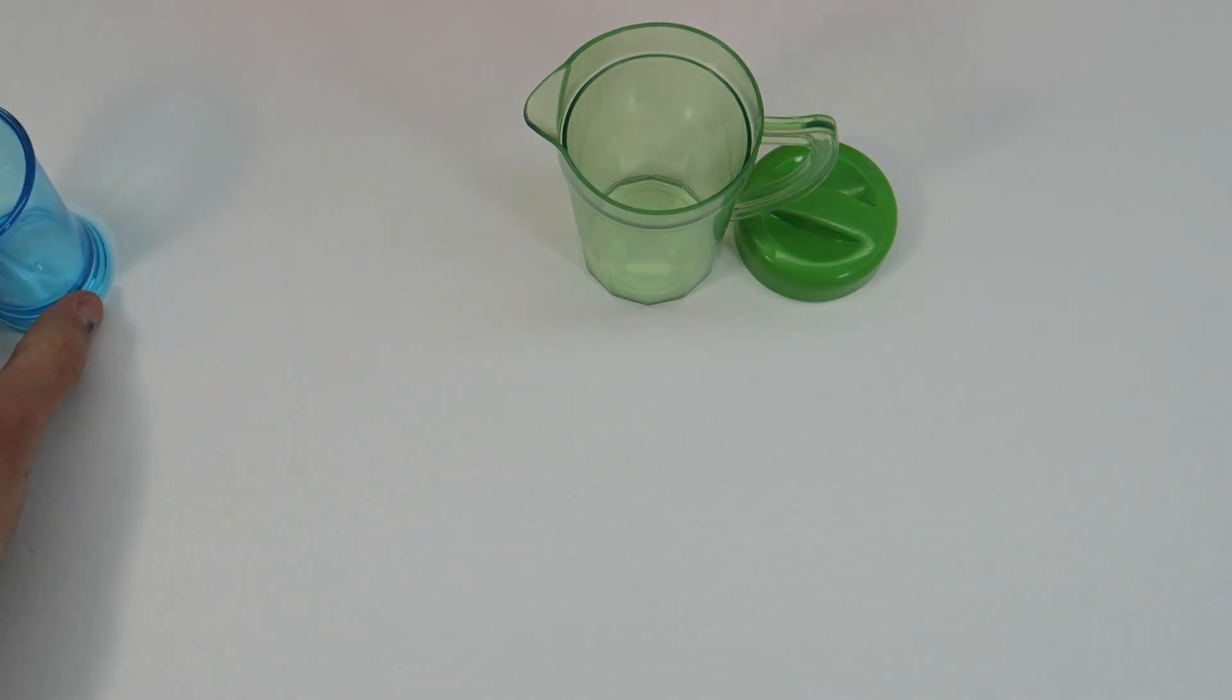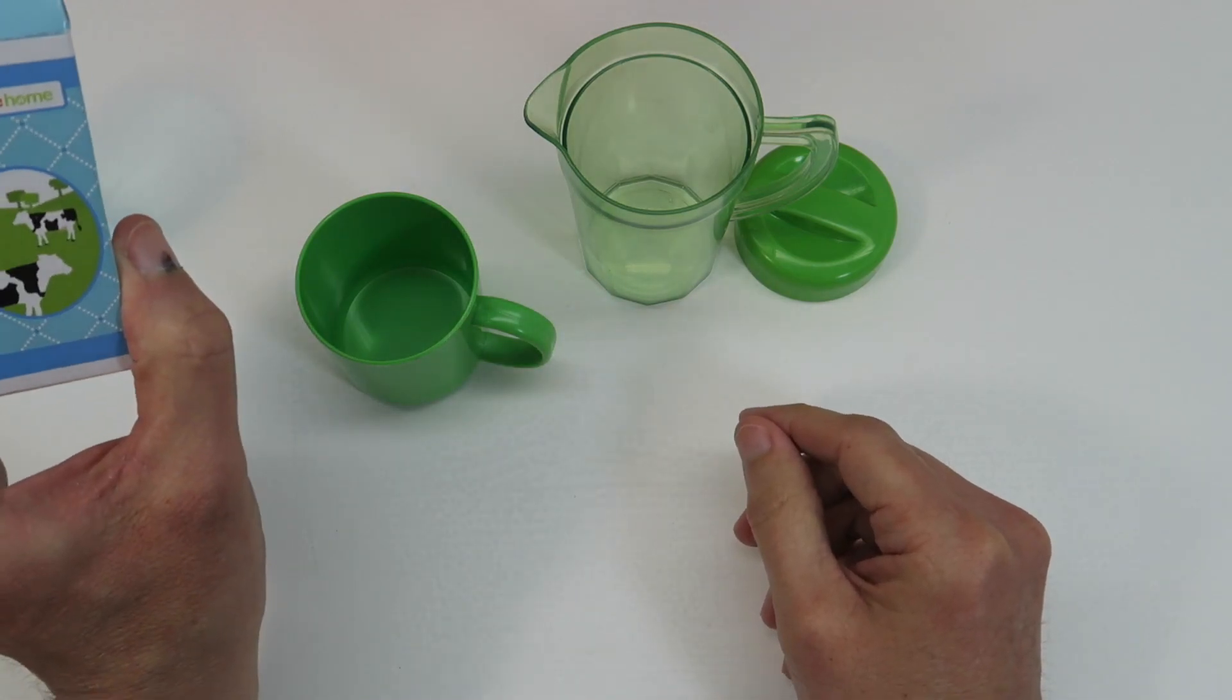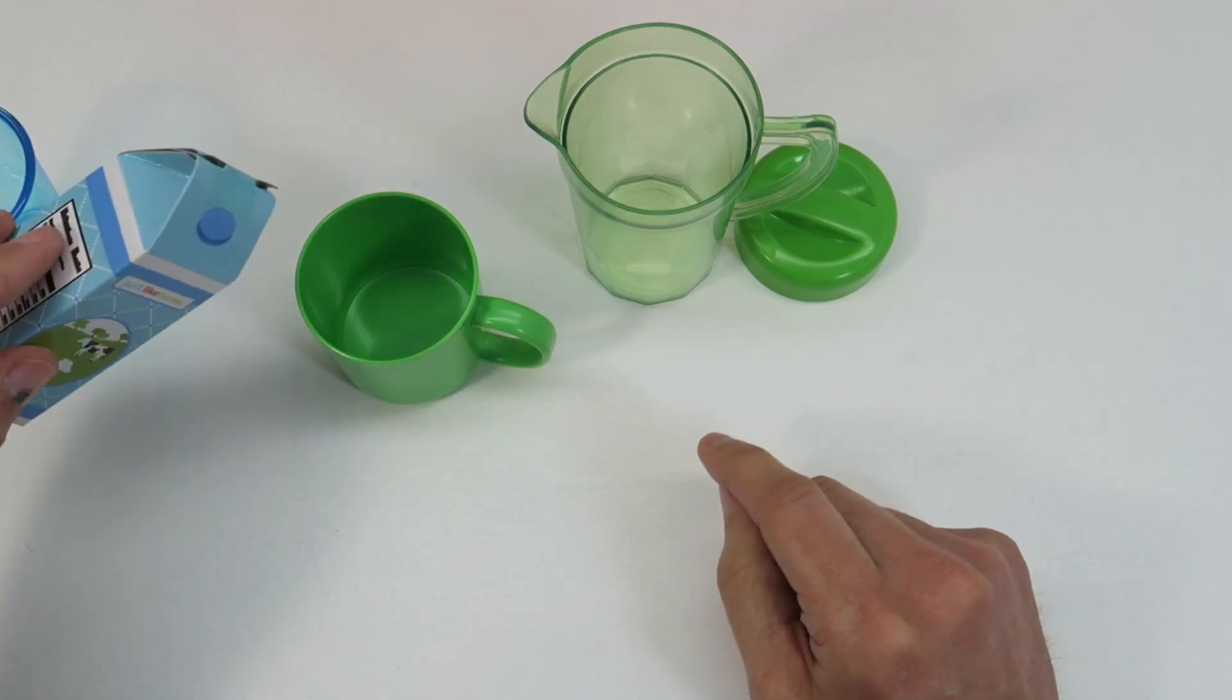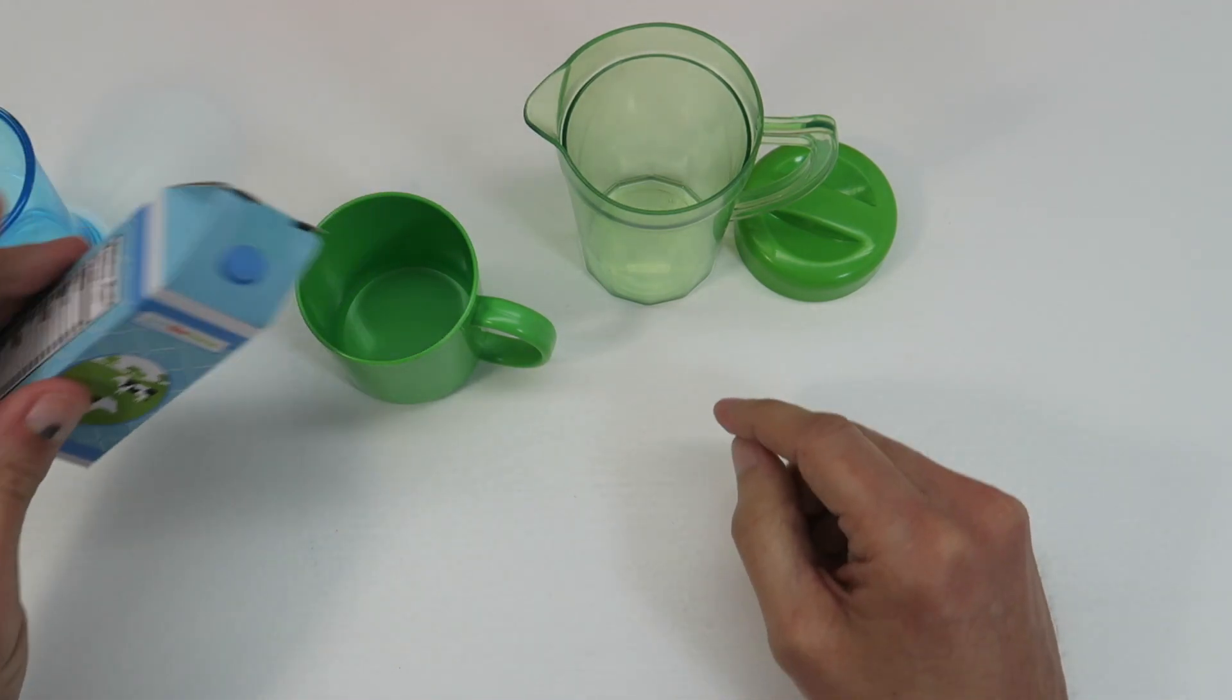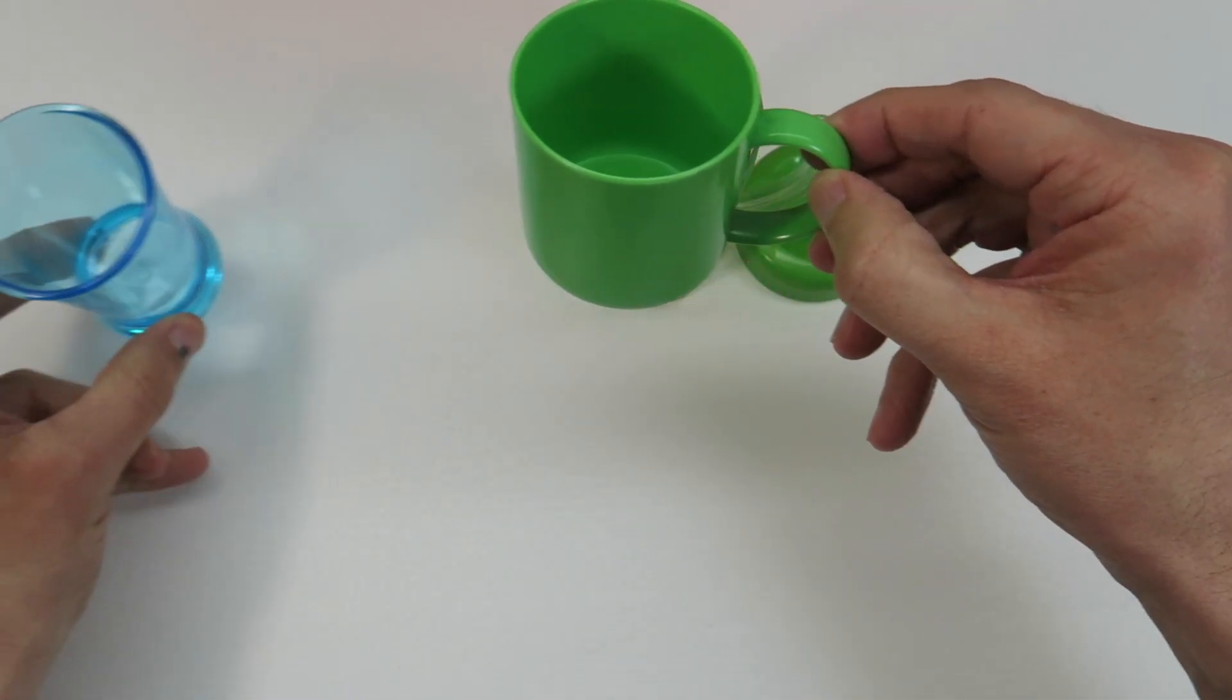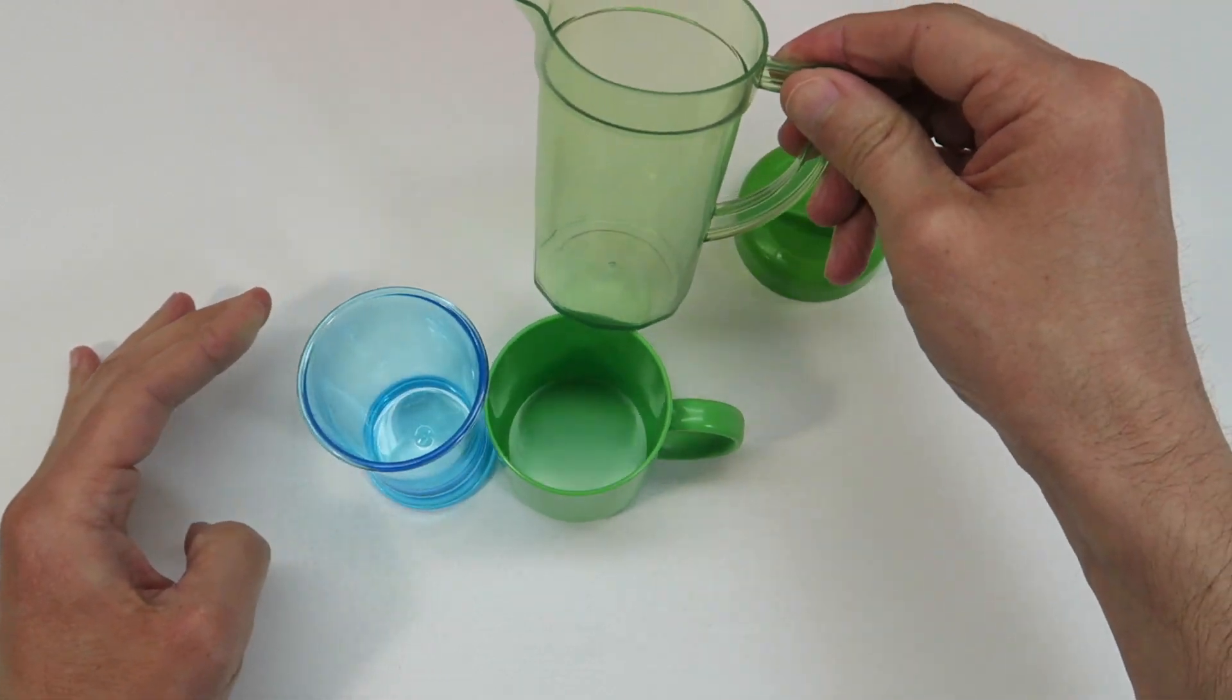Now we'll pour some milk in this cup, so we have our milk container here. Let's just open this up. Pour the milk. So now we have a cup of milk, glass of orange juice, and a pitcher of orange juice.